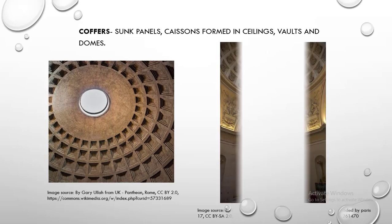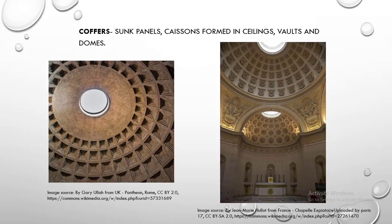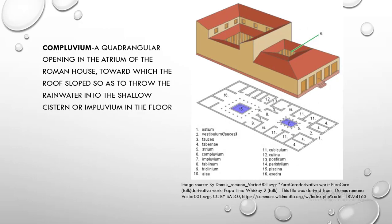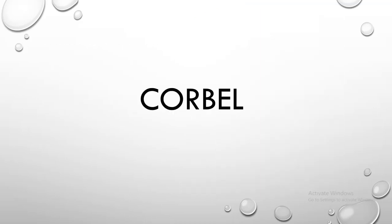Coffers. Coffers are sunk panels or caissons formed in ceilings, vaults and domes. Compluvium. Compluvium is a quadrangular opening in the atrium of the Roman house, toward which the roof slopes so as to throw the rainwater into the shallow cistern or impluvium in the floor.